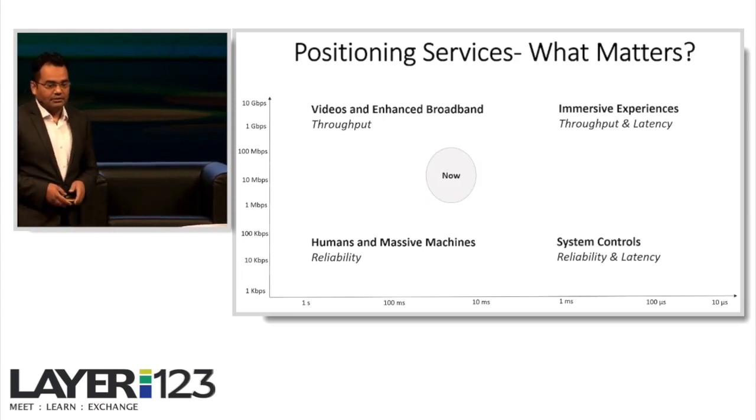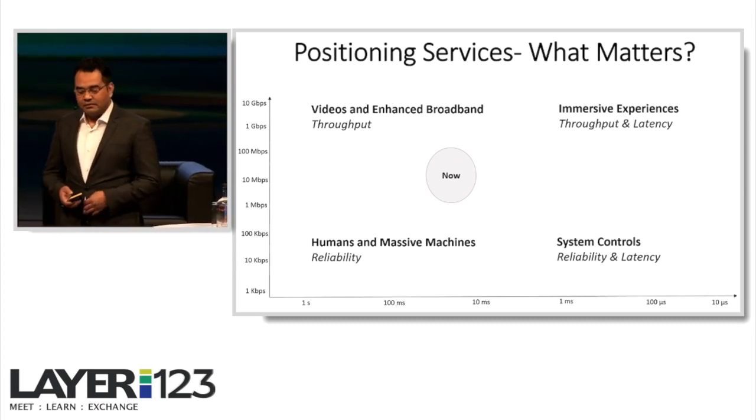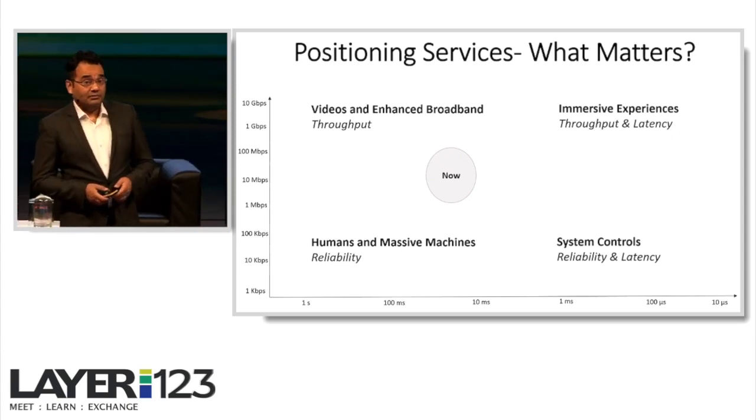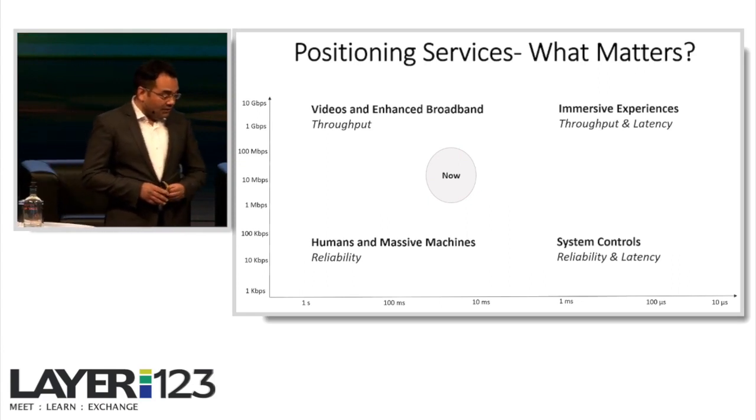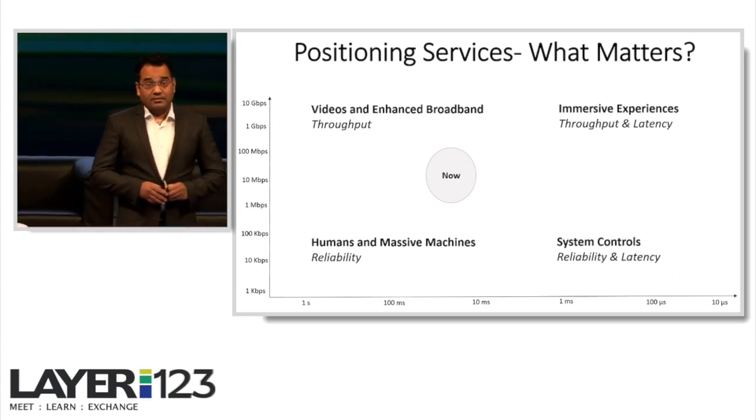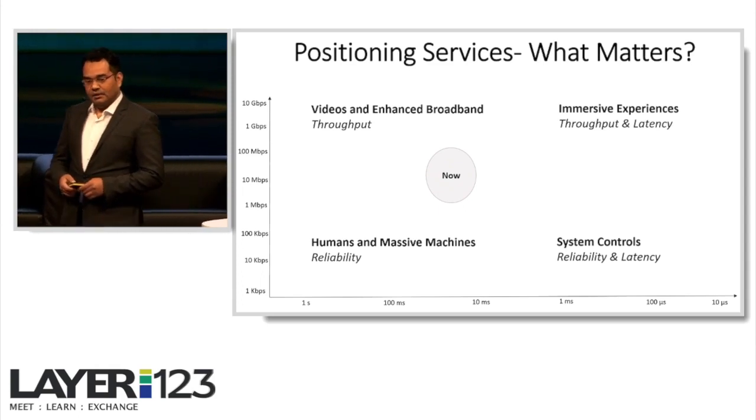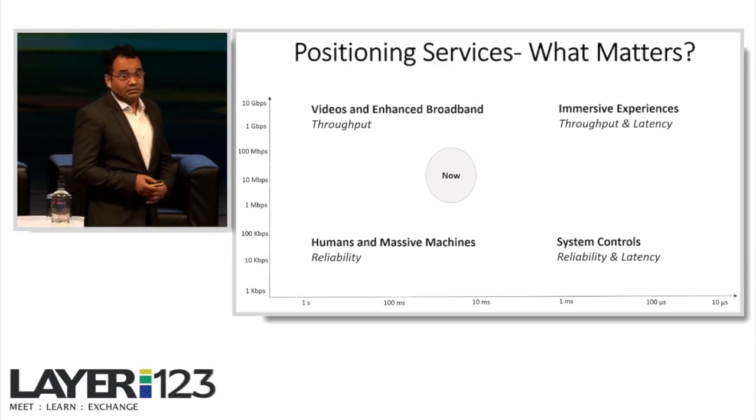So we are here now. We are at about 100 Mbps and we are looking for 1 Gbps, obviously, and about 10 millisecond latency. We can go in any direction. On the right top, where we'll get throughput and latency. And at the bottom as well, bottom right, where we will get reliability and latency. So these are the things that matter. It's not only throughput, it's also the latency and the ultra-reliability.